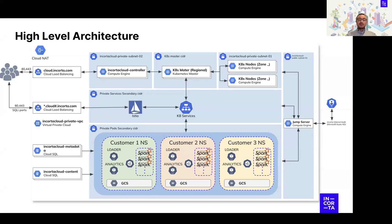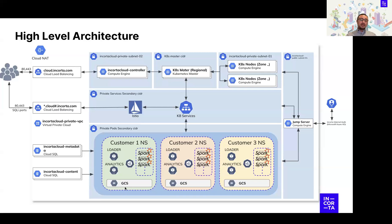Your instance on the cloud is hosted on Kubernetes pods located in namespaces — Customer 1, Customer 2, Customer 3, and so on. Each namespace contains all the components needed for your instance to run: the Analytics service, Loader, CMC, and all other required services, including Spark executors and the storage layer for the tenant directory.